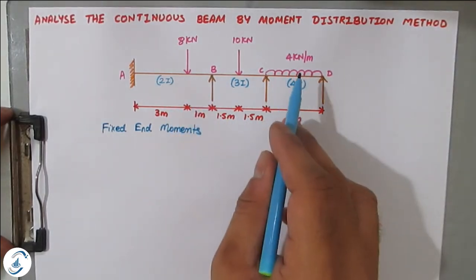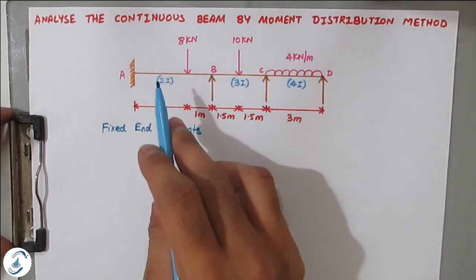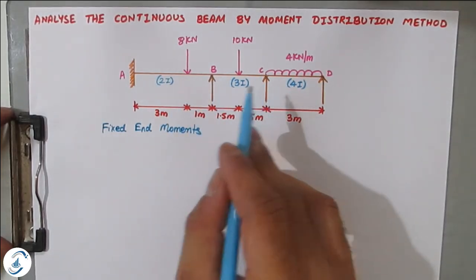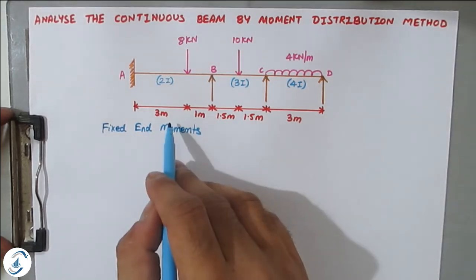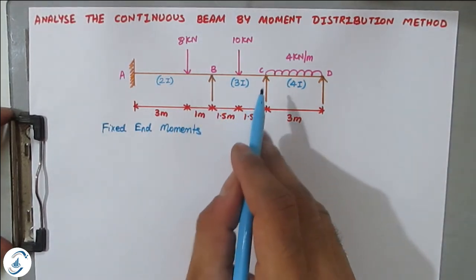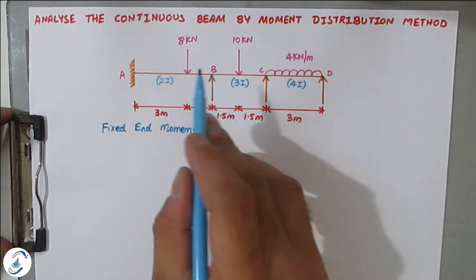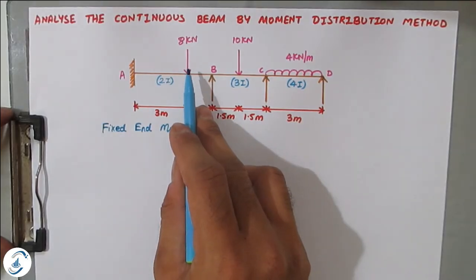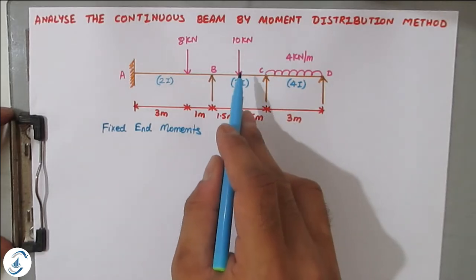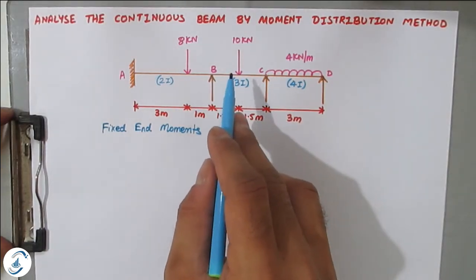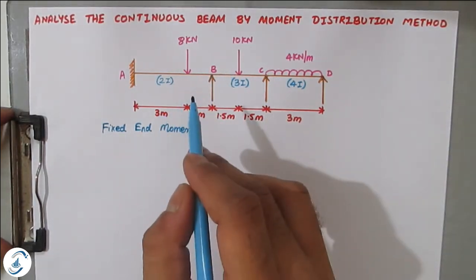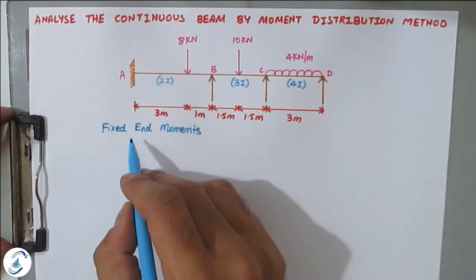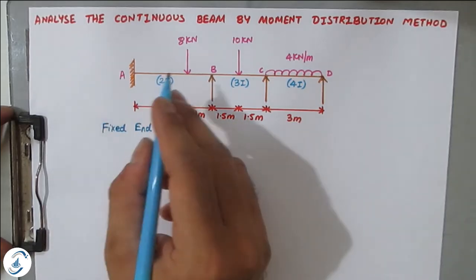This beam has a combination of point load and uniformly distributed load. It is a three-span beam where I is changing for every span. Span AB is 4 meters, BC is 3 meters, CD is 3 meters. In span AB the point load is not acting at the center, while in span BC the point load is acting at the center, so different formulas apply.